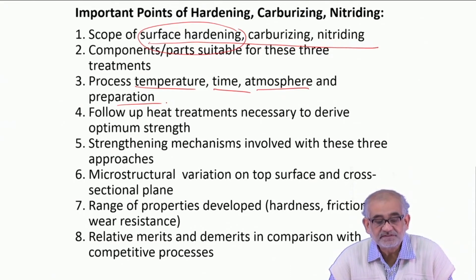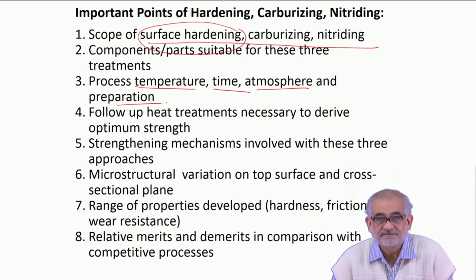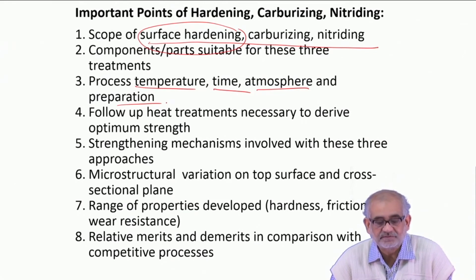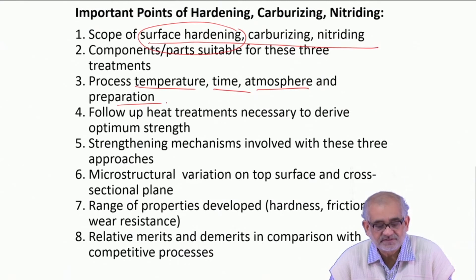Heat treatment is required only for carburizing - and hardening treatment is itself a heat treatment process, so there is no separate post-processing treatment required for hardening, but carburizing does require one. The strengthening mechanism in hardening and carburizing is the same - martensitic hardening - but in nitriding it is different: the presence of nitrides.